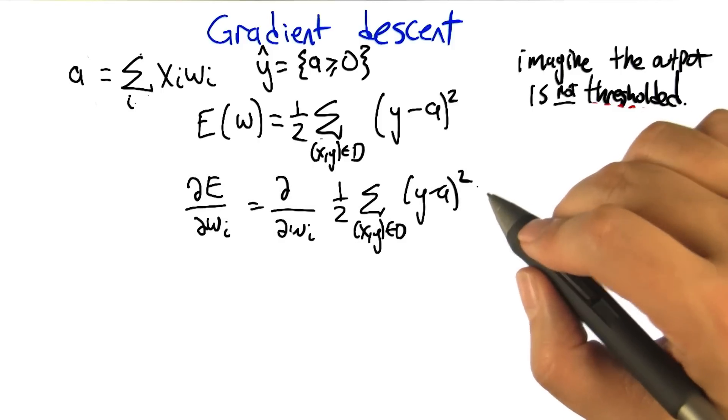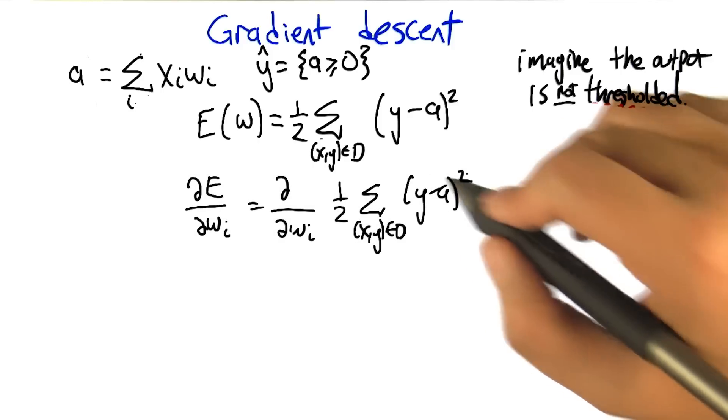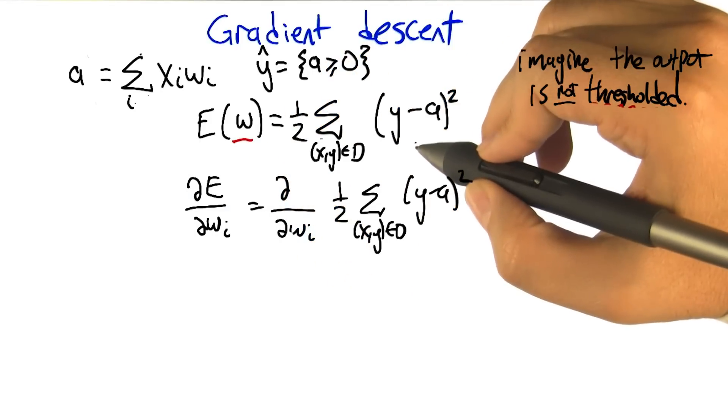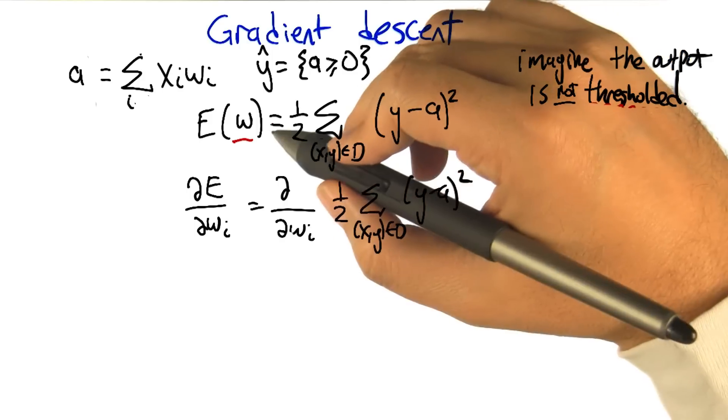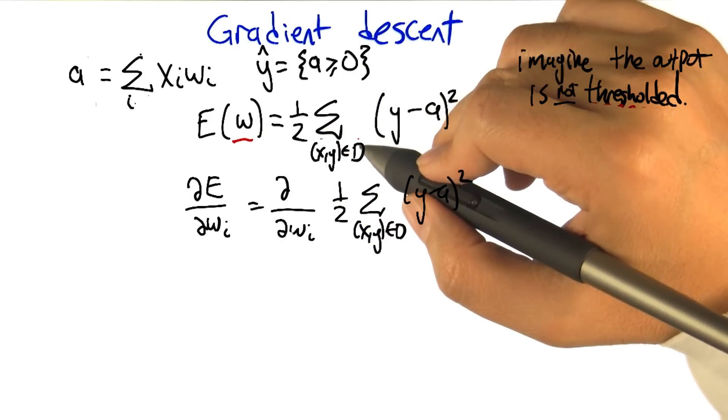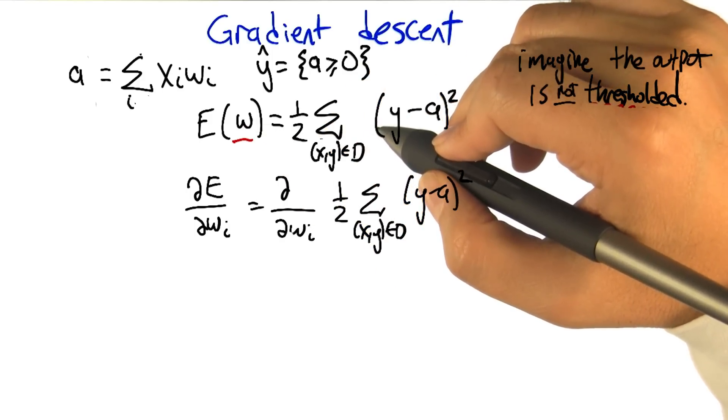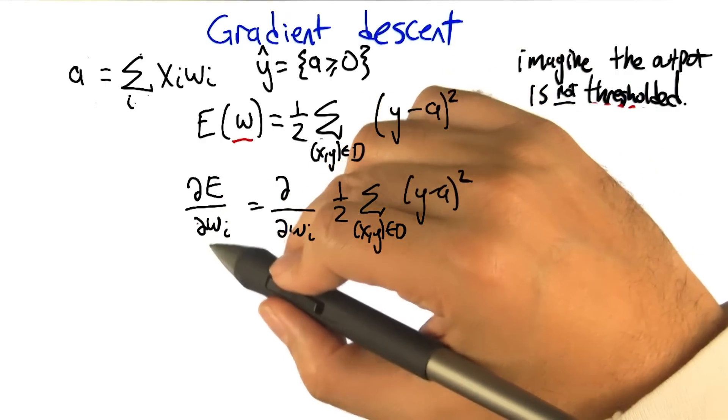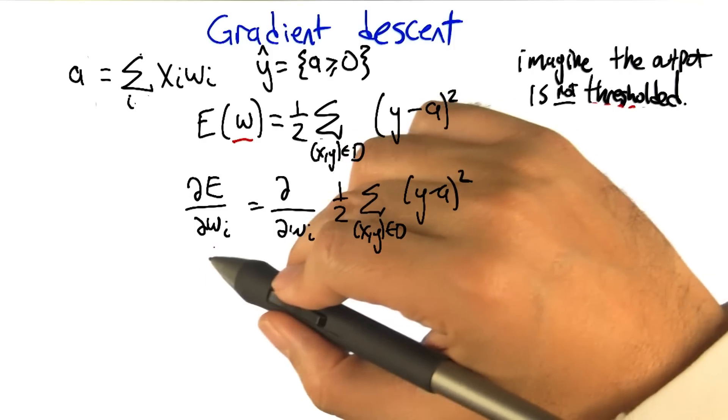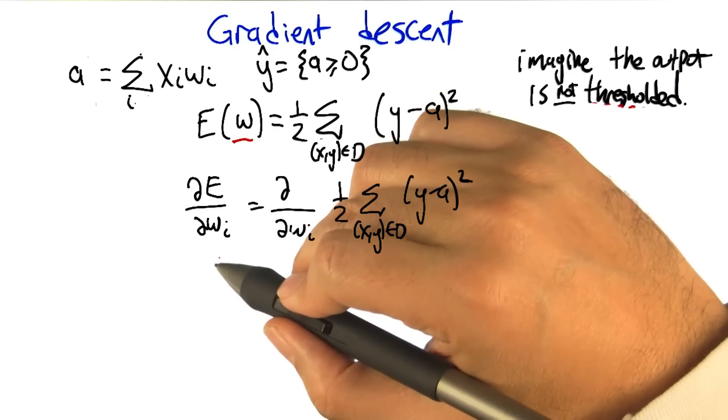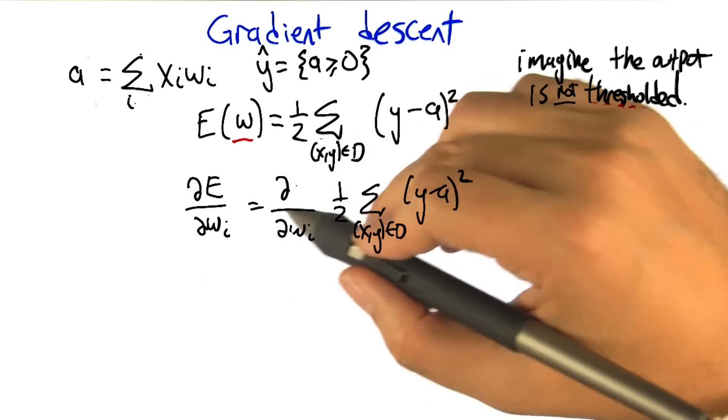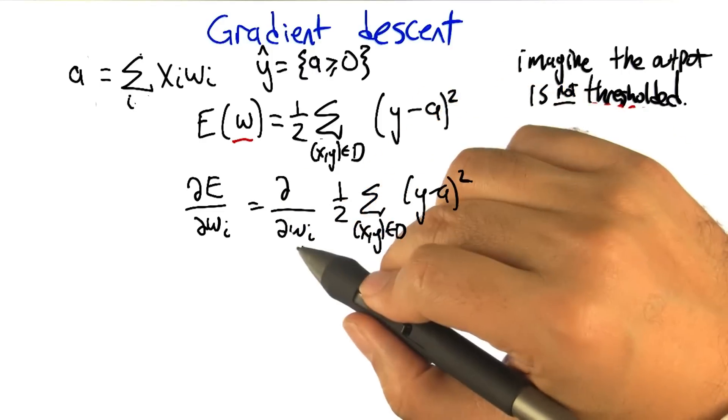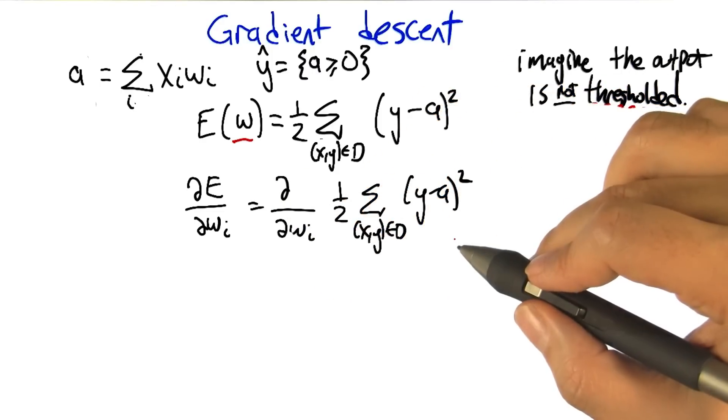Just like in the regression case, we're going to fall back to calculus, right? Calculus is going to tell us how we can push around these weights to try to push this error down. So we would like to know how does changing the weights change the error, and let's push the weights in the direction that causes the error to go down. So we're going to take the partial derivative of this error metric with respect to each of the individual weights, so that we'll know for each weight which way we should push it a little bit to move in the direction of the gradient.